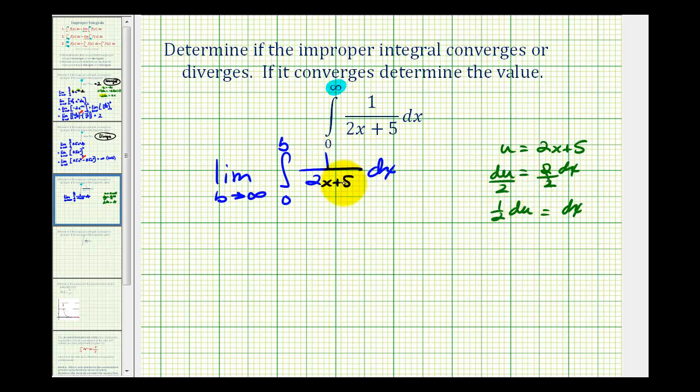Now we're going to rewrite this in terms of u to find the antiderivative. So we'll have the limit as b approaches infinity of, we'll temporarily leave off the limits of integration because these are in terms of x and we're going to write this in terms of u.